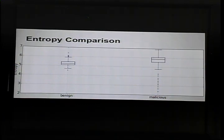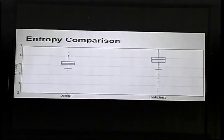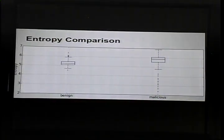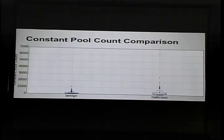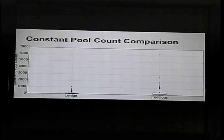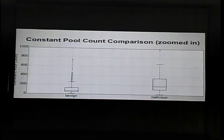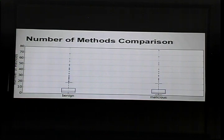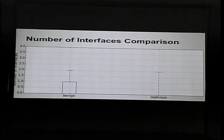Next we look at entropy over the entire file — the malicious ones show a little higher entropy. Then we look at the number of items in the constant pool; the malicious ones can have some really high amounts. Zooming in, you can see that the malicious ones tend to have a little bit more. We then look at number of methods — lots of overlap, probably not a good way to distinguish between the two — and number of interfaces, which is almost always zero. Not all features you extract are winners; some aren't better than others.